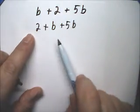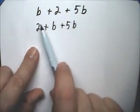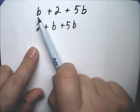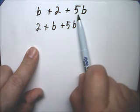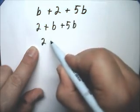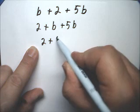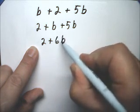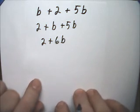So we won't usually show this step. Eventually, right now, I want you to understand that this b can be added to this 5b to get 6b. So this ends up to be 2 plus 6b. And that's it simplified.